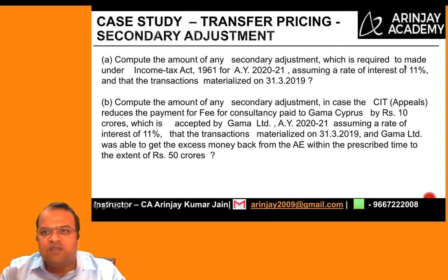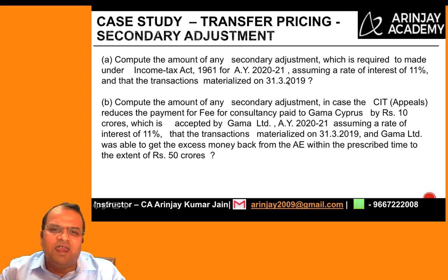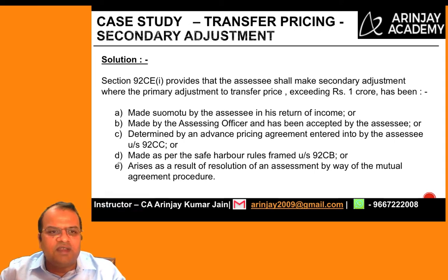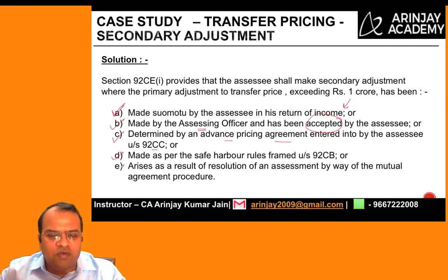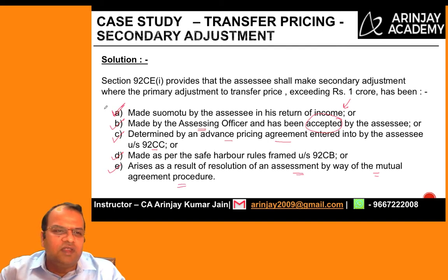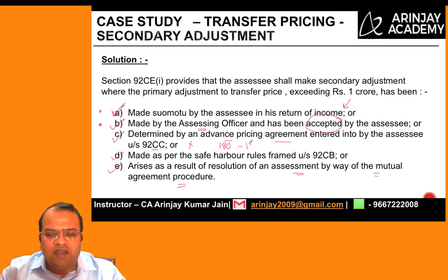To compute secondary adjustment under the Income Tax Act 1961 for AY 2021-22, secondary adjustments arise: (1) where the assessee himself offers an adjustment, (2) where adjustments are made by the AO and accepted, (3) if determined by an APA, (4) as per safe harbor rules, and (5) through mutual agreement proceedings. In this case, since the APA price matched the ITR price for raw material, no further adjustment is needed on that count.